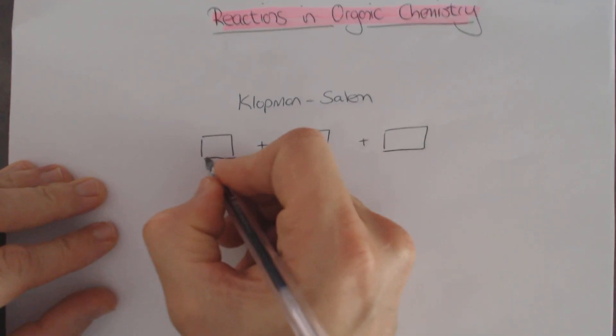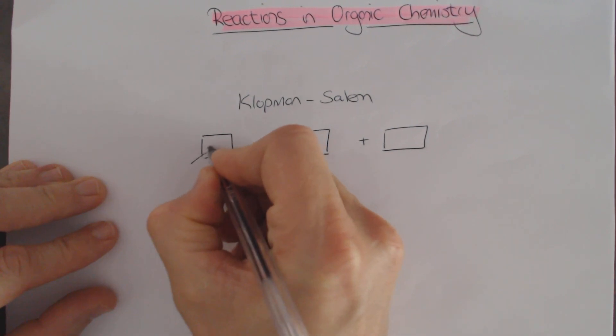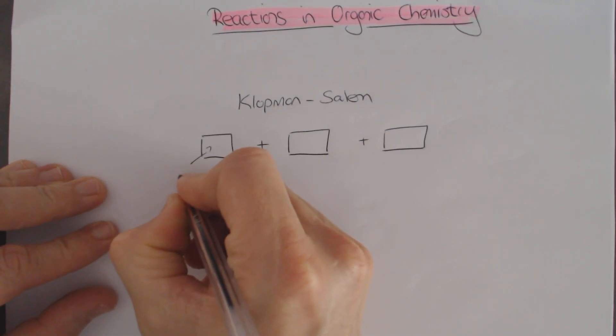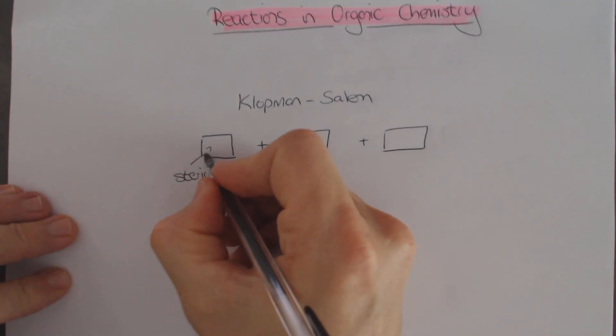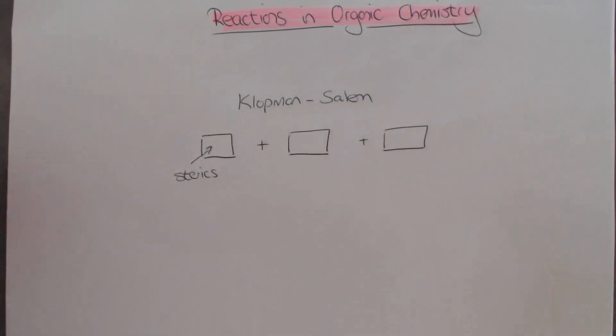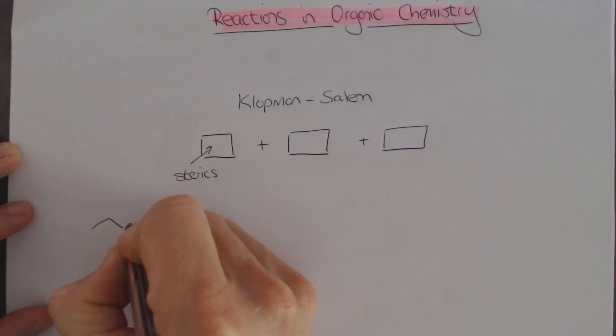The three parts all represent different aspects of chemical reactions which affect a particular reaction outcome. The first part over here has everything to do with what we call sterics. Sterics are things which prevent a reaction from occurring just because of size.